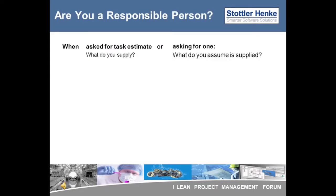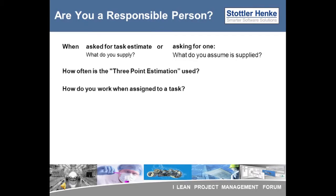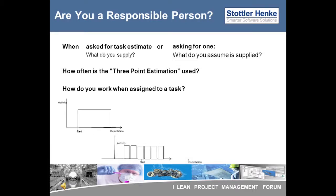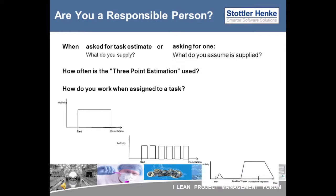Are you a responsible person when dealing with task duration estimates? What do you supply when you're asked for a task estimate? What do you assume is supplied to you when you ask someone else for a task estimate? Is only one number provided as a task estimate? Are probabilities normally supplied regarding task estimates? Is the three-point estimation technique utilized? Another important question is, how do you work once the task has started? Does work occur on the task as non-stop as possible, so the level of activity is relatively constant? Or is the task often interrupted, with many intervals when it is not being worked on? Or is there an initial burst of activity at the beginning, and then the task is largely neglected until some deadline trigger forces one to return to it? These points will be addressed further later in the presentation.